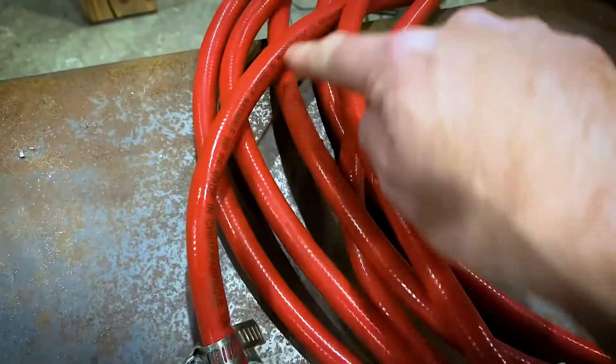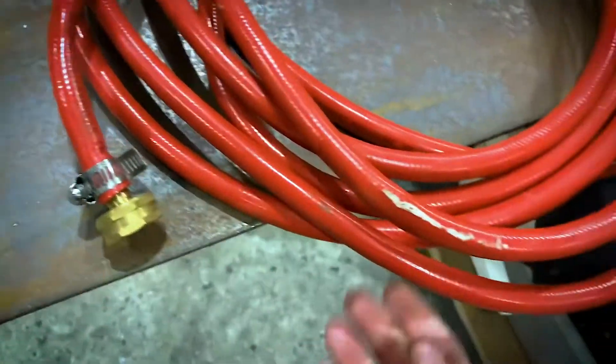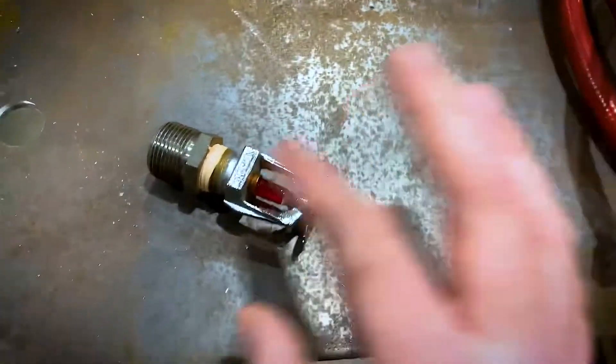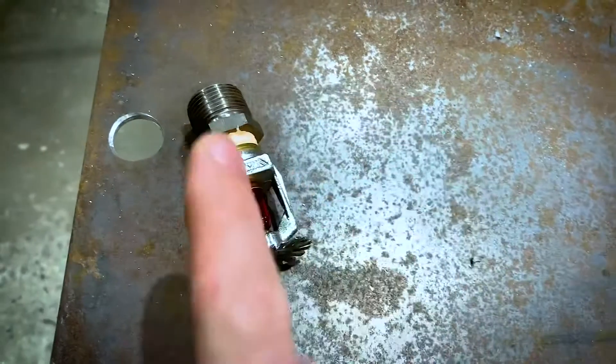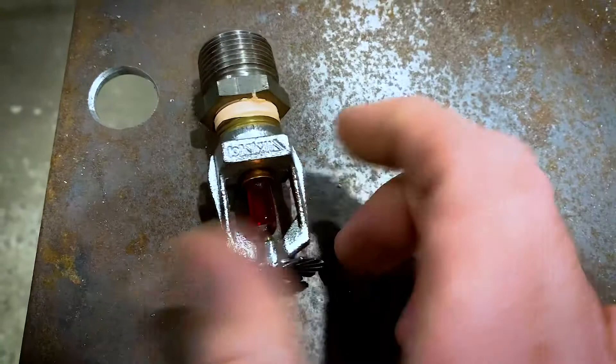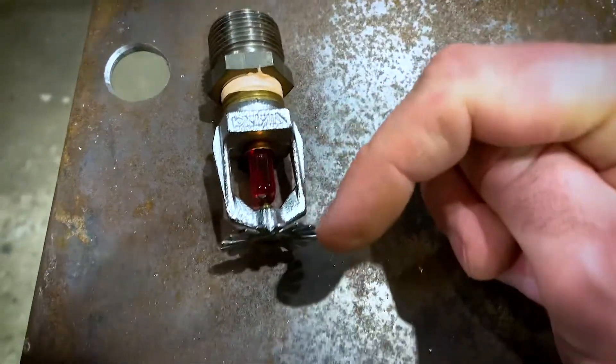I'm going to fill this with water so this will be full of water, and then I'll hook this up to my compressor, probably around 20 psi or so, maybe 30. And then I'm going to put a flame to that bulb right there and that'll shatter, and then you'll see how the sprinkler head works.